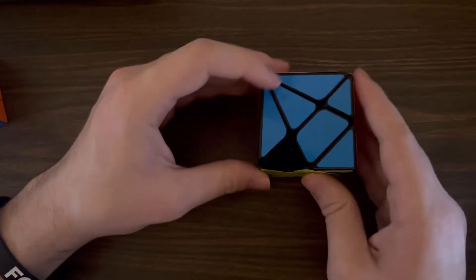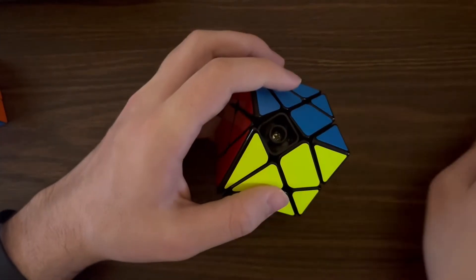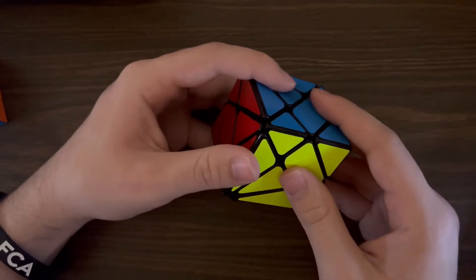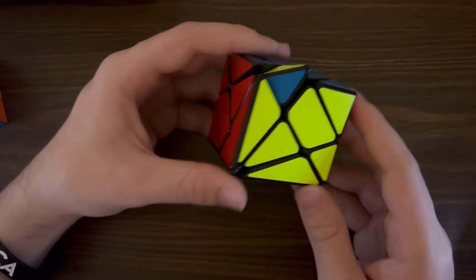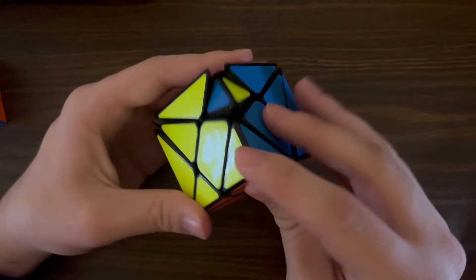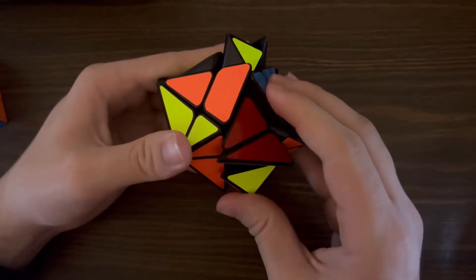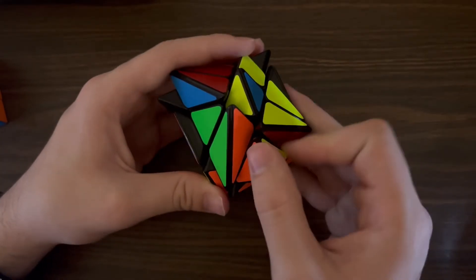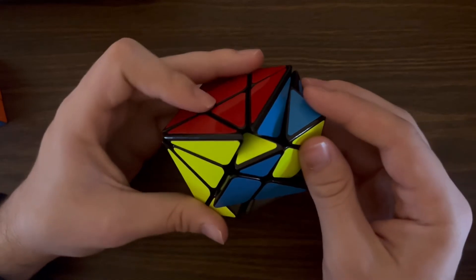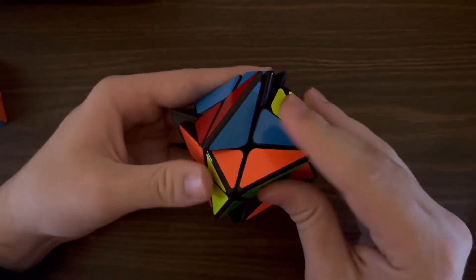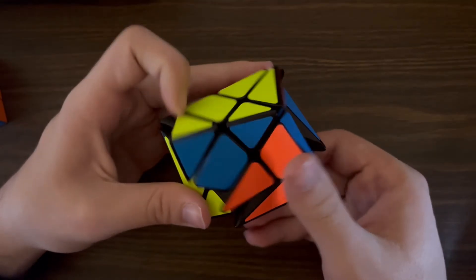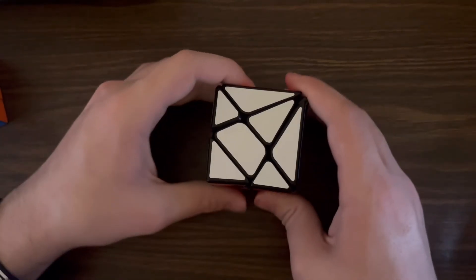So now we're going to take a look at this center piece right here. There are two possibilities for what this can look like. It can either be completely solved, or there's another case. To solve this case, all you need to do are two simple algorithms, which is two J-perms. There's the first J-perm. Now we will do the second J-perm. And like that, you have solved the axis cube.